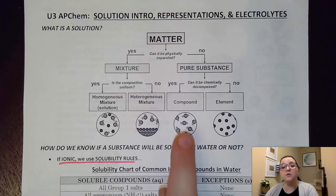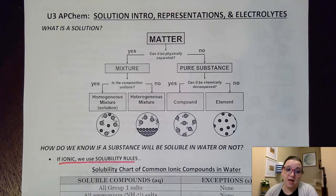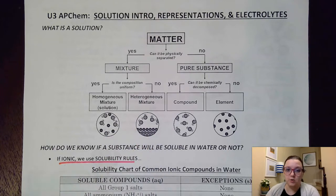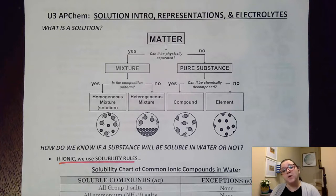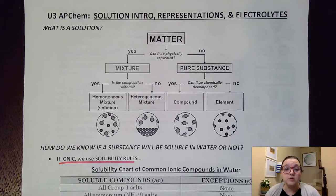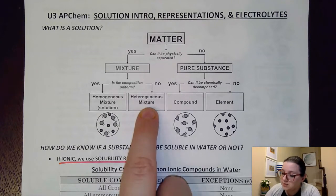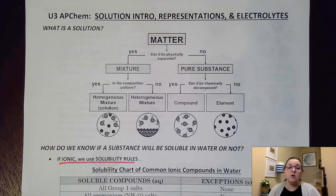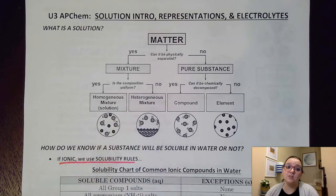With a compound, our particles have different elements bonded together. However, when dealing with mixtures I should see two different types of particles. The key way to tell a solution — a homogeneous mixture — from a heterogeneous one is how the composition of those particles is distributed. On a heterogeneous mixture I should notice clumping and uneven distribution, even layers. With a solution I should see an even distribution of particles throughout.